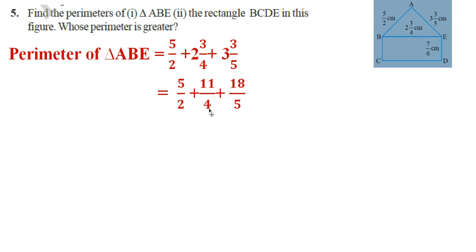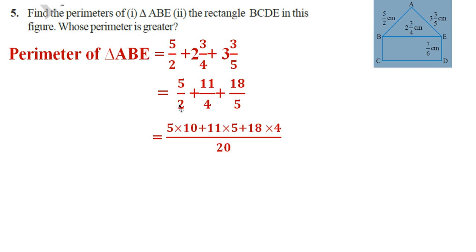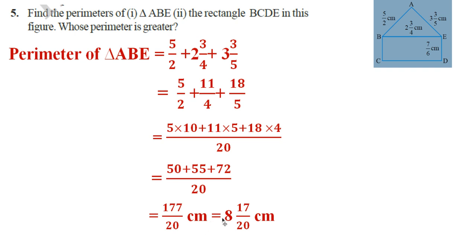Now, what is the LCM of 2, 4, and 5? Yes, it is 20. Take 20 as a common denominator and add these three. In 20: 2 goes 10 times so 5 × 10; 4 goes 5 times so 11 × 5; and 5 goes 4 times so 18 × 4. That gives 50 + 55 + 72 divided by 20, which is 177/20 centimeter, equal to 8 17/20 centimeter.